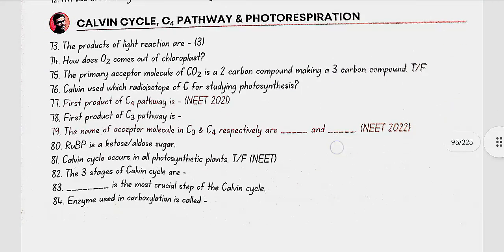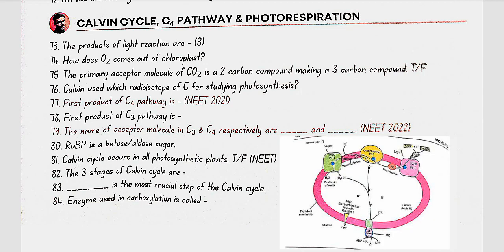Calvin cycle, C4 pathway, and photorespiration. The products of light reaction are O2, ATP, and NADPH. O2 comes out of the chloroplast by diffusion. The primary acceptor molecule of CO2 is a 5-carbon sugar, ribulose bisphosphate (RuBP) — not a 2-carbon compound. Calvin used the radioisotope C14 for studying photosynthesis.